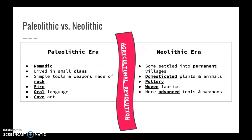There was a split in time between the Paleolithic and the Neolithic era. The Paleolithic era is categorized by nomadic people that lived in small clans. They made tools and weapons out of rock, used fire, started to create an oral language, and were known for cave art as their written language. Then the agricultural revolution happened, causing the Neolithic era. People started to settle into permanent villages because they were able to domesticate plants and animals — farming and raising animals for food. Other characteristics of the Neolithic era included pottery, woven fabrics, and more advanced tools and weapons using metal like bronze.